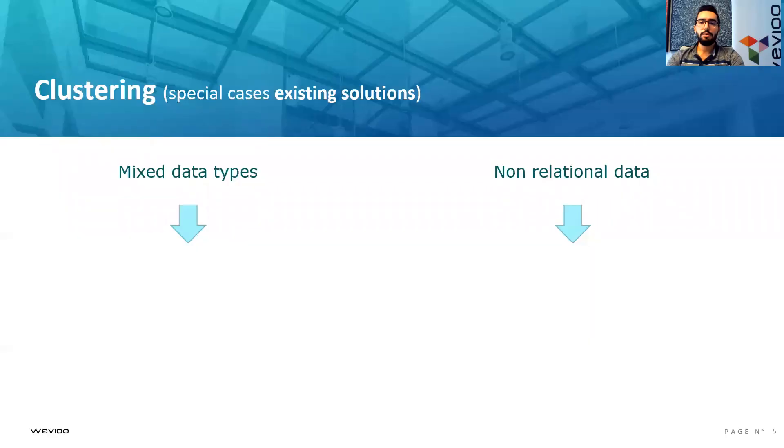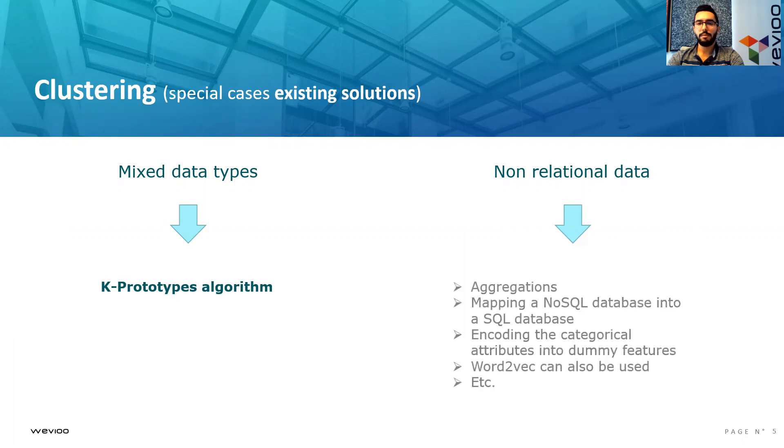For the non-relational data with multivalued attributes, we might use aggregations like using the mean, the max, or the minimum of the continuous labels, or the mode of categorical labels. Also, we might use the mapping of a NoSQL database into a SQL database, which is not a good solution, actually.